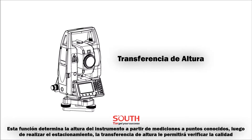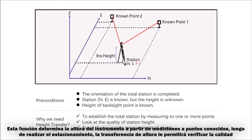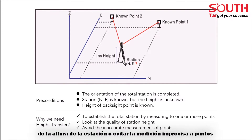This function determines the height of the instrument from measurement of a known point. Before completing the setup, Height Transfer will help you look at the quality of station height or avoid the inaccurate measurement of points.